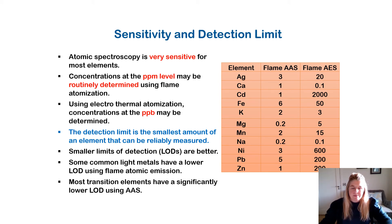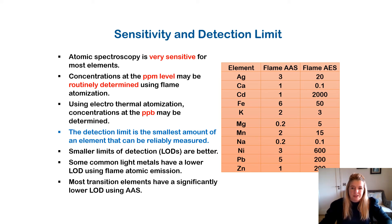The detection limit is the smallest amount of an element that can be readily and reproducibly measured — it shouldn't be just a once-off measurement. Smaller limits of detection, abbreviated as LODs, are better. Some common light metals have a lower LOD using flame AAS, while most transition elements have a significantly lower LOD using AAS. Here we can see the limits of detection for the different elements.